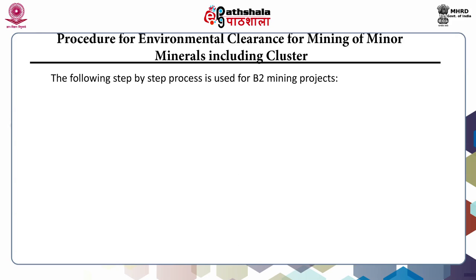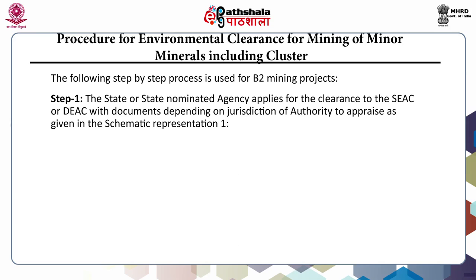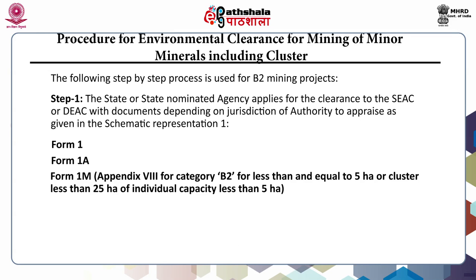Procedure for environmental clearance for mining of minor minerals including cluster: Step 1. The state or state nominated agency applies for clearance to the SEAC or DEAC with documents depending on the jurisdiction of the authority to appraise, as given in schematic representation 1. The forms required are Form 1, Form 1A, Form 1M as in Appendix 8, for Category B2 for area less than or equal to 5 hectares, or cluster less than 25 hectares with individual capacity less than 5 hectares.